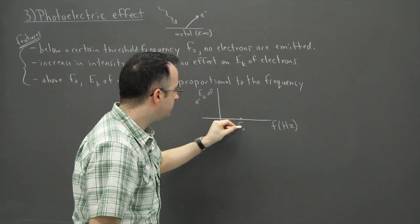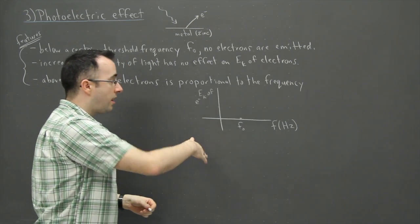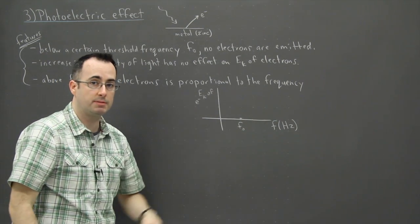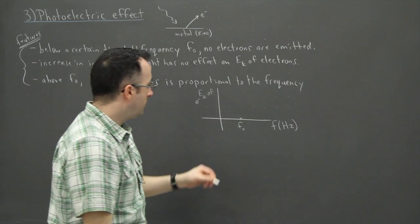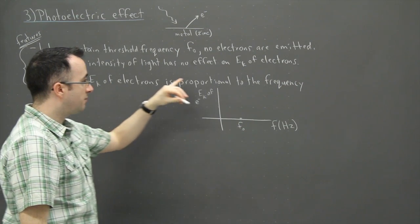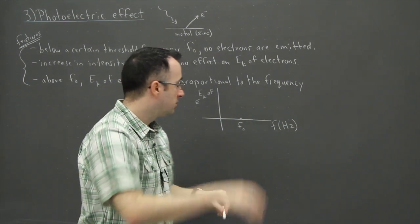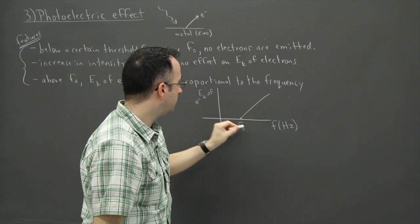So let's say I call that F0. What this means then is that below F0 nothing happens, there's no electrons emitted. But above which, so above that, then the kinetic energy of the electrons is proportional to the frequency. Proportional means linear. So it'll do some sort of straight line like this.